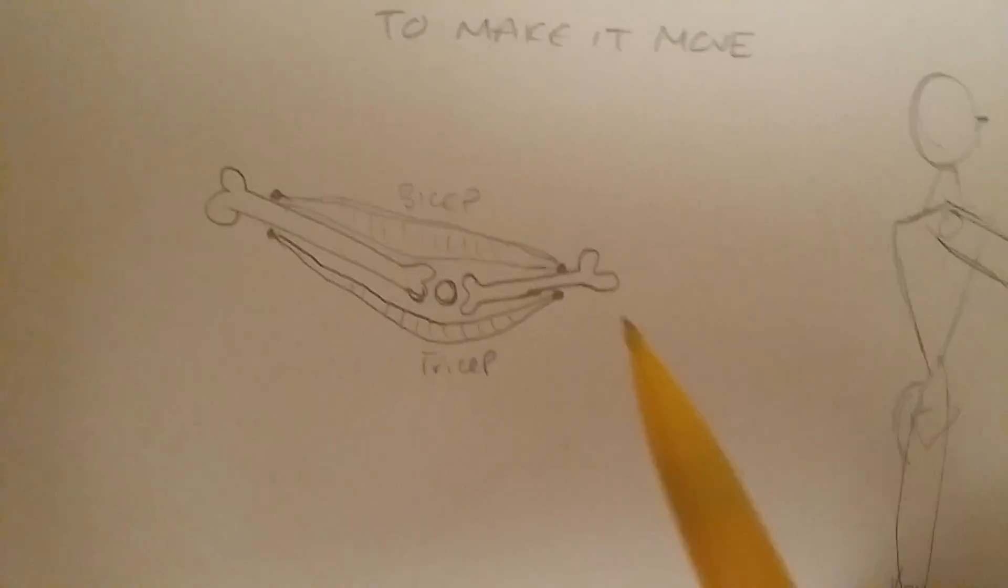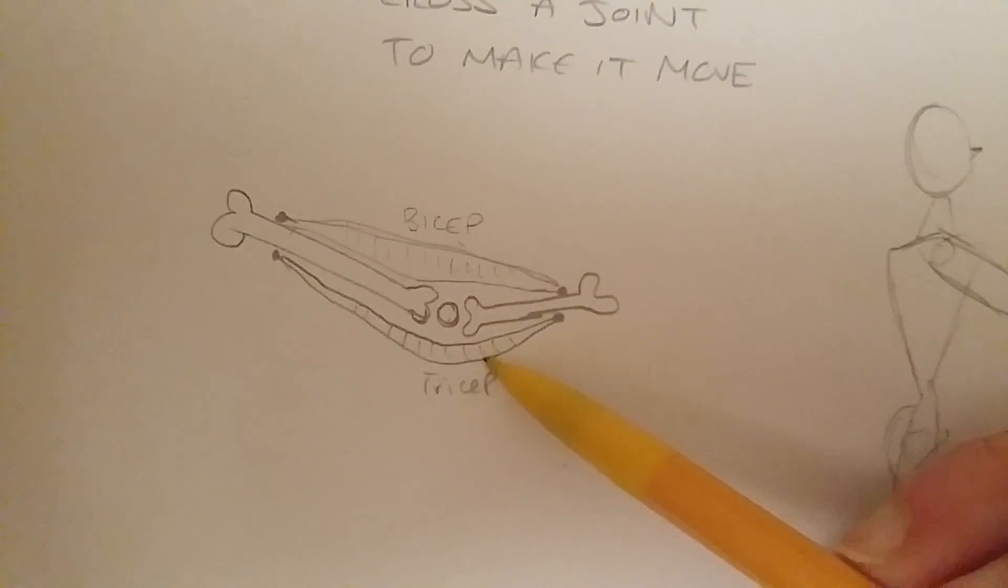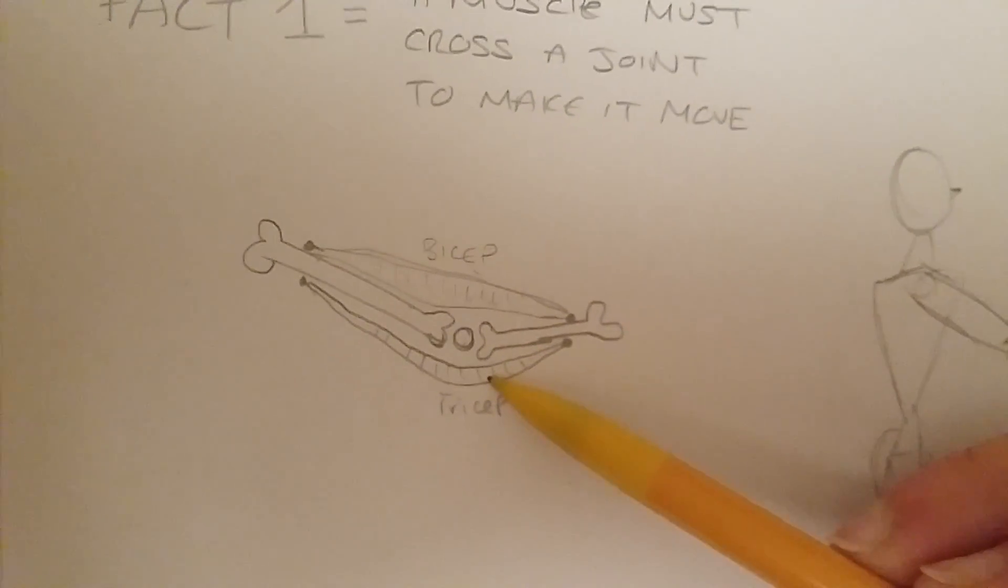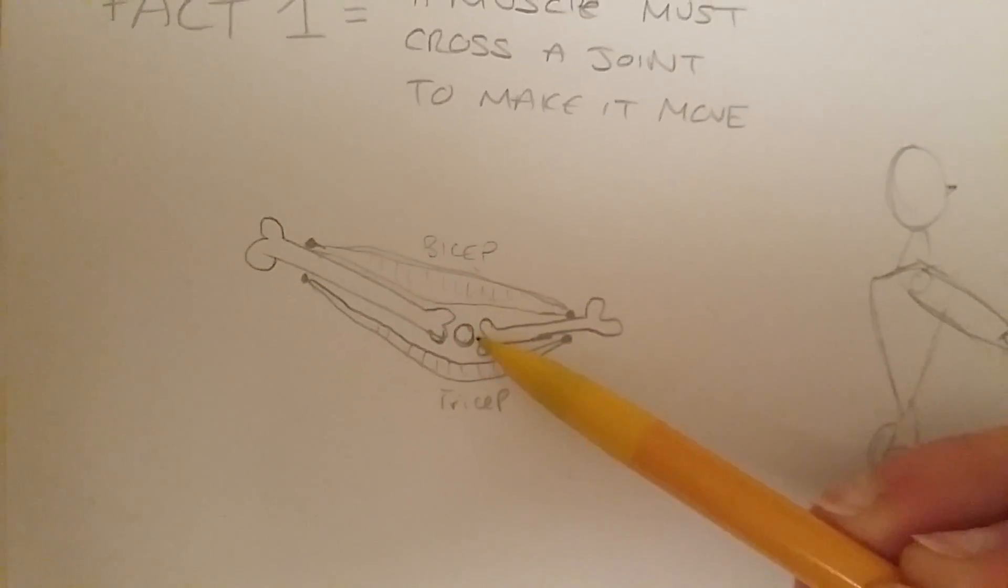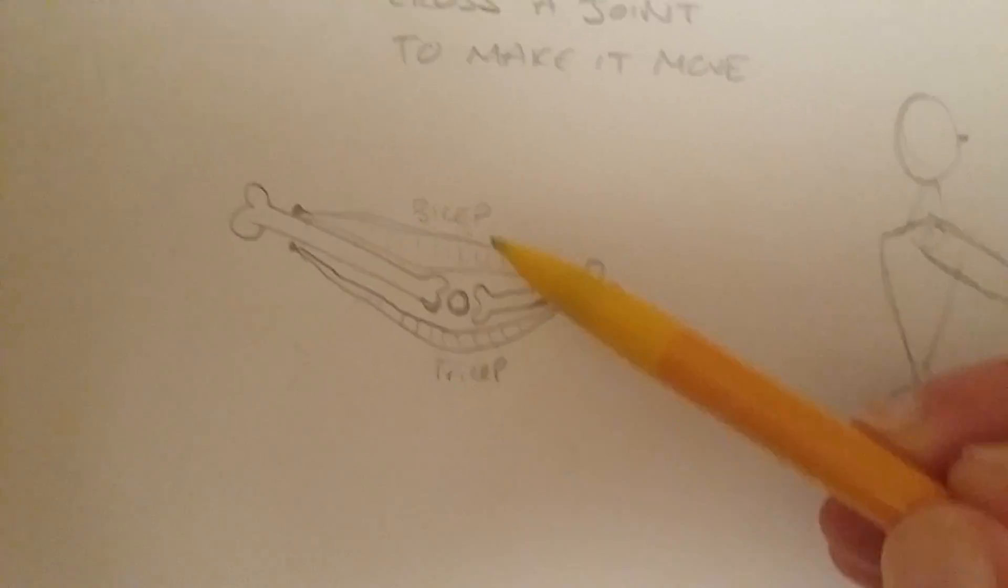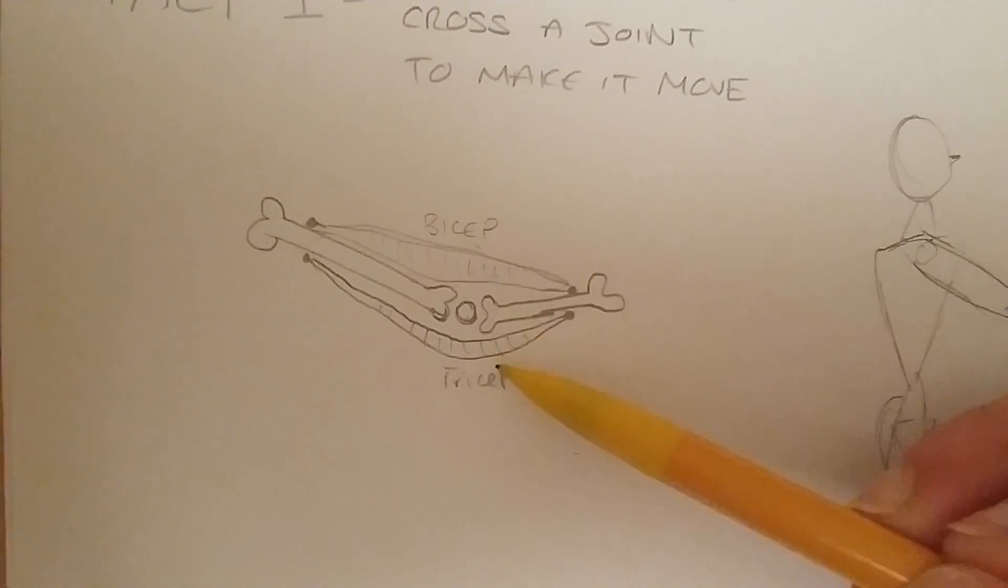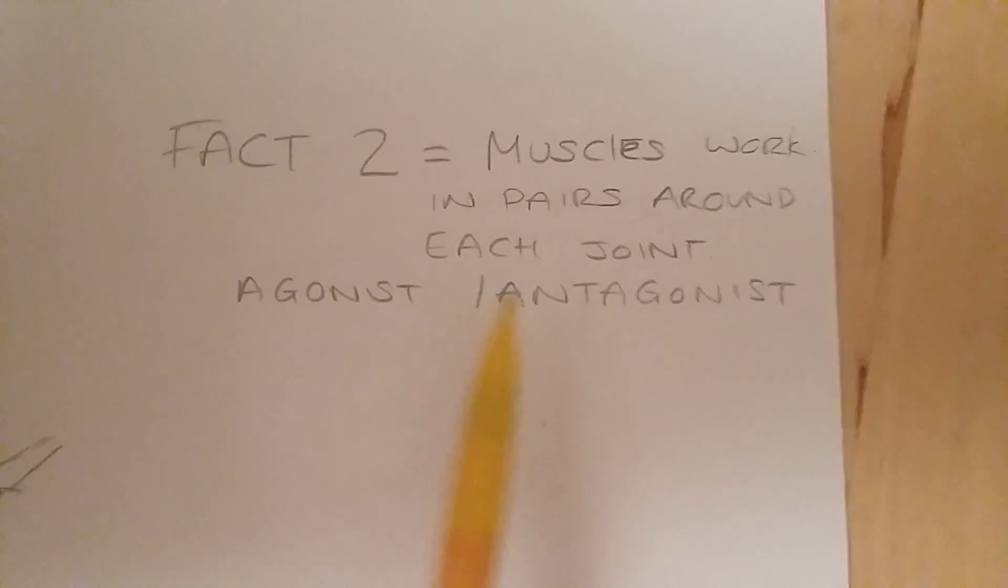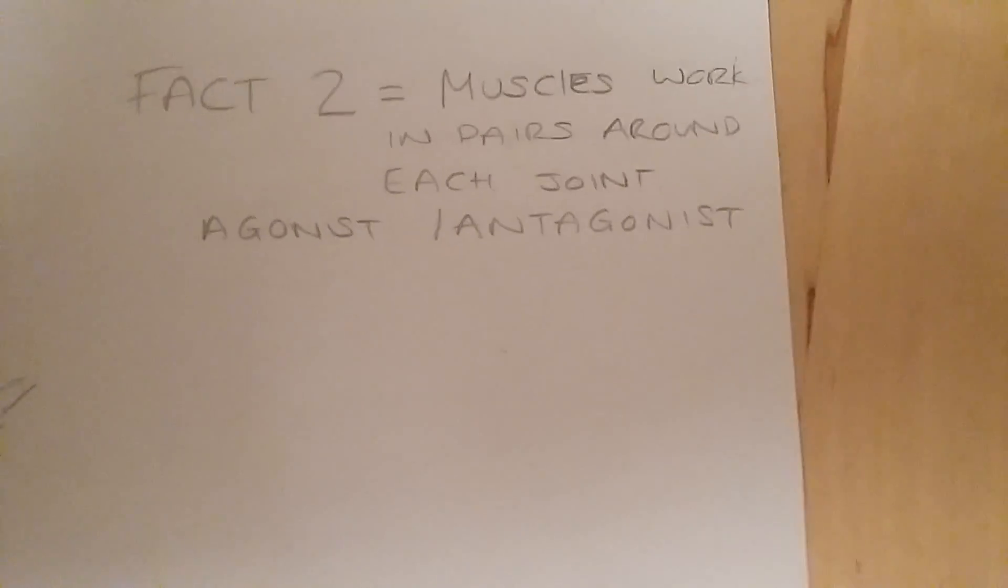Now all you need to know is that there is an agonist and antagonist. So they're classed as agonist-antagonistic pairs that revolve around one joint. So in this case, the bicep and tricep are agonist-antagonist pairs and they revolve around the elbow. So that's it written down on here. So agonist-antagonist, they're the words you're looking out for.